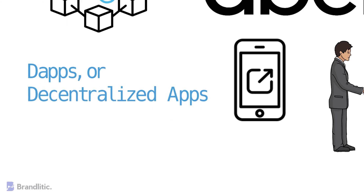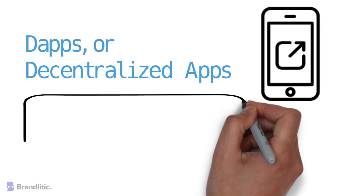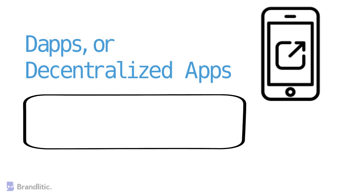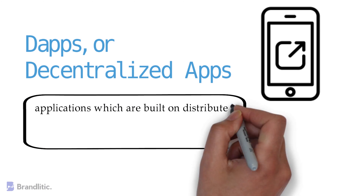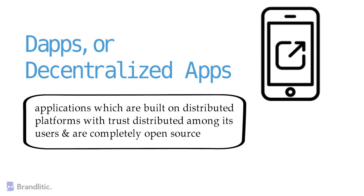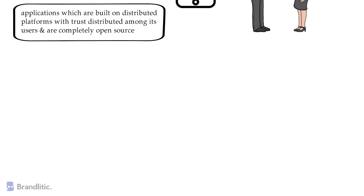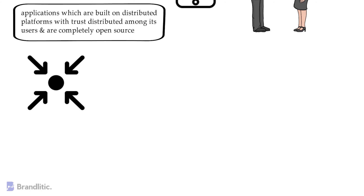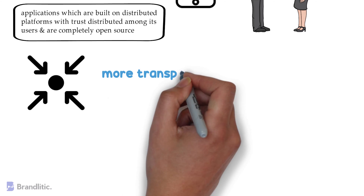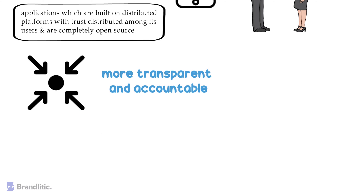Fundamentally, DAPs or decentralized apps are applications which are built on distributed platforms with trust distributed among its users and are completely open-source. This means that they are designed to avoid single points of failure and are more transparent and accountable than existing applications.